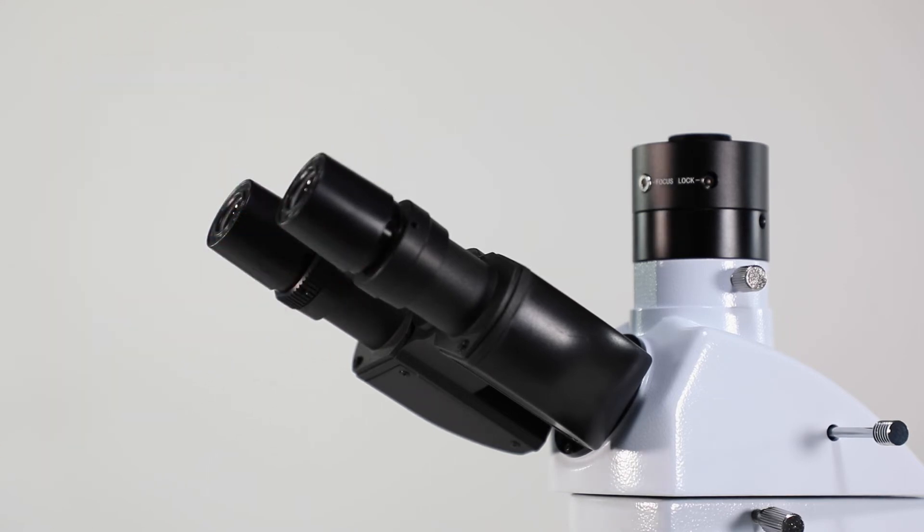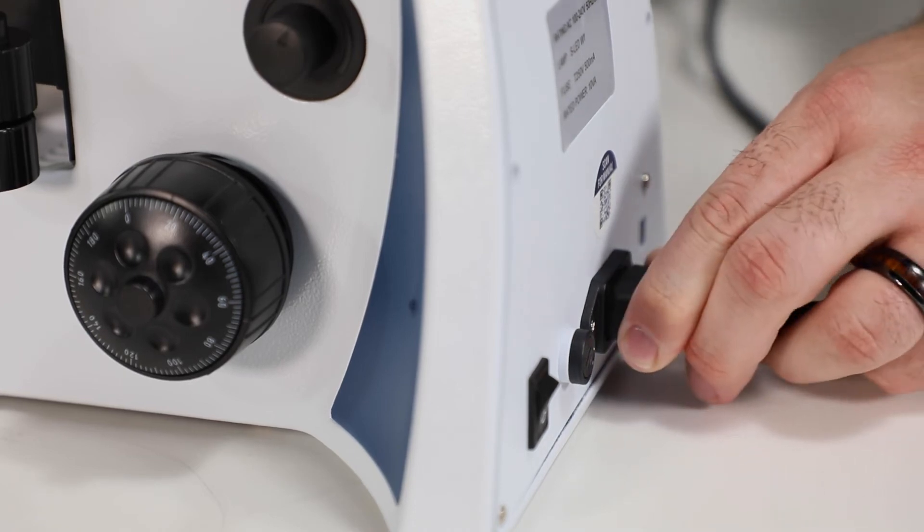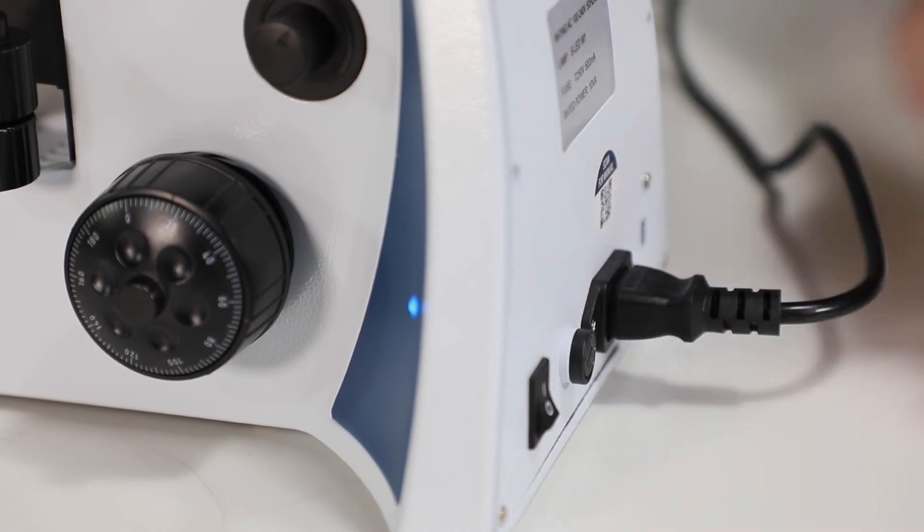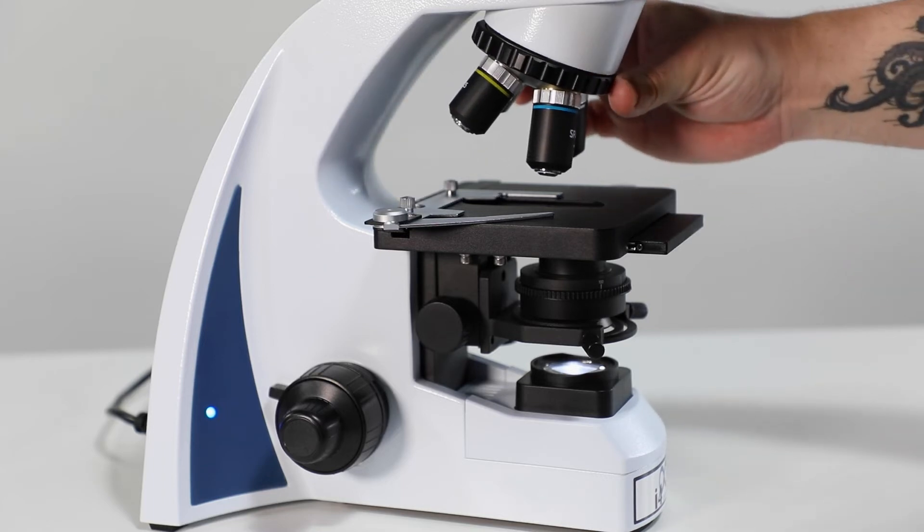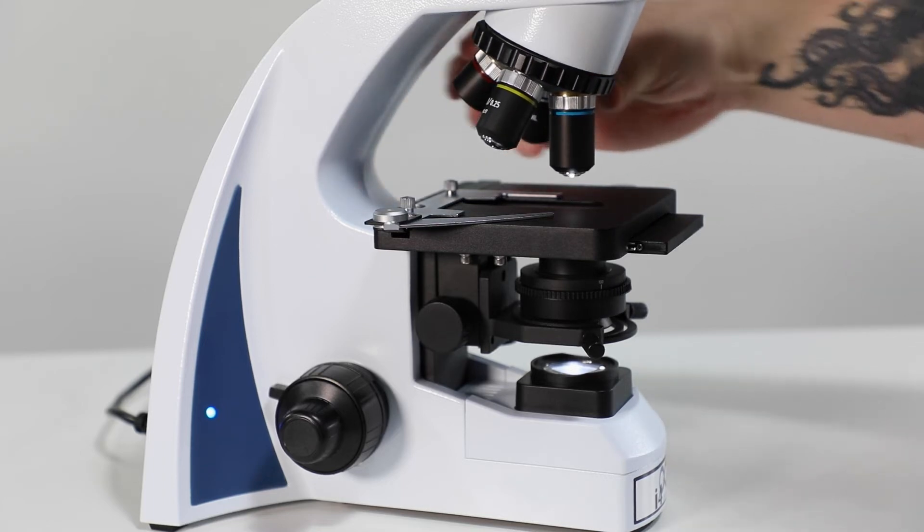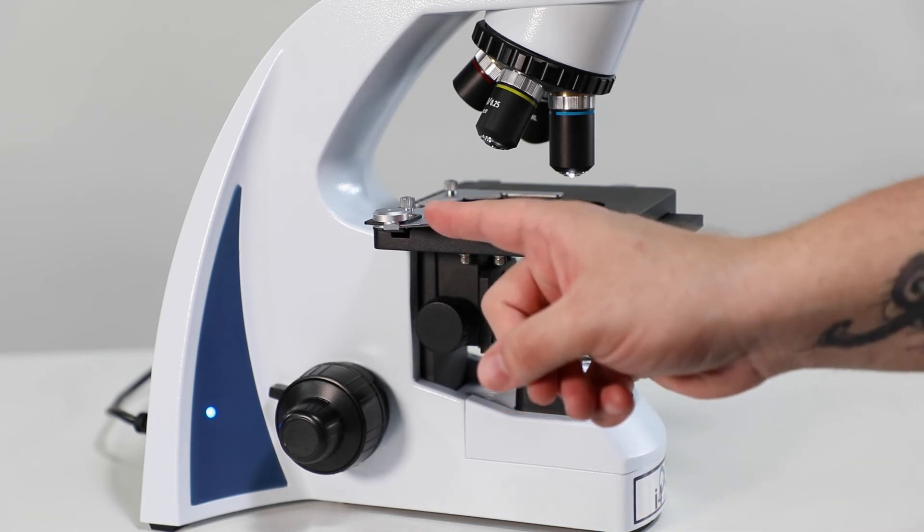The final step to setting up your microscope is setting your stage height. So plug in your power cord and turn on your microscope to get started. Make sure your microscope is moved to the 40x objective. Then place a prepared slide on the stage using the slide finger to secure it.